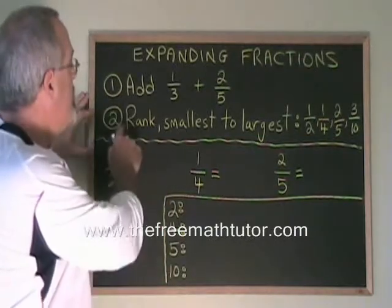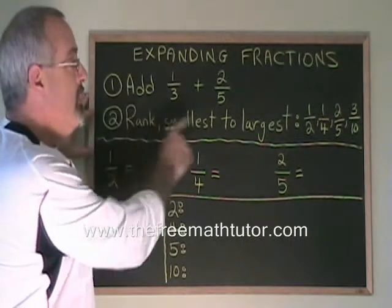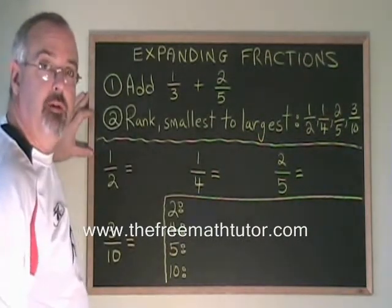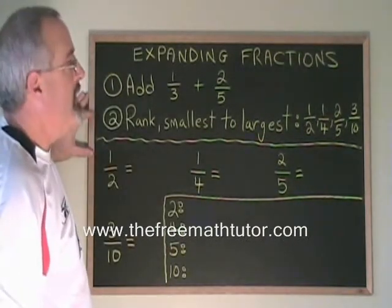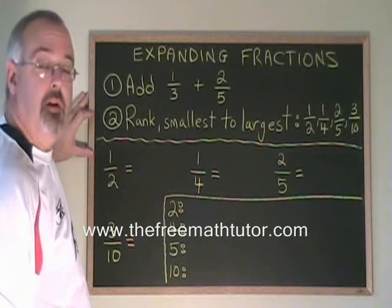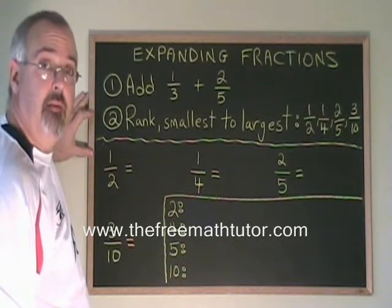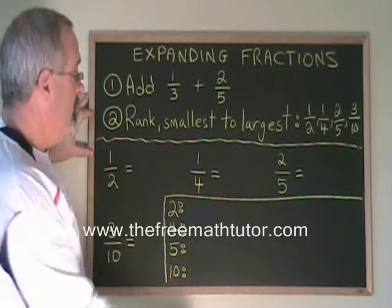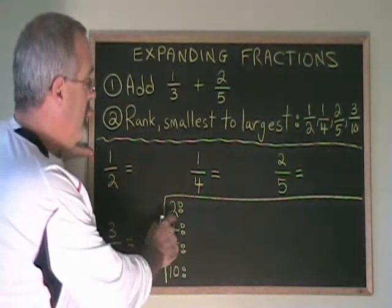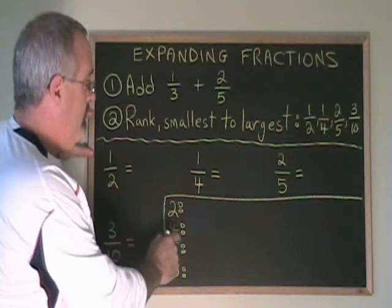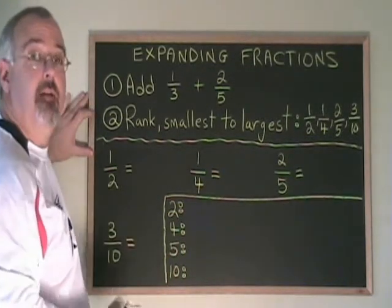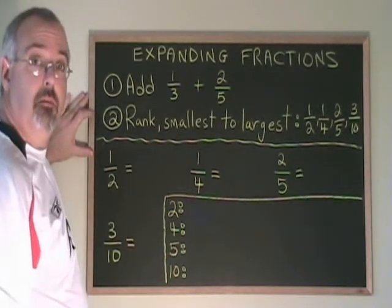Now let's look at question 2, where we're ranking these 4 fractions. We need them to be over a common denominator so that we can compare them and then rank them. So we will find the multiples of 2, 4, 5, and 10, and find the lowest common multiple.